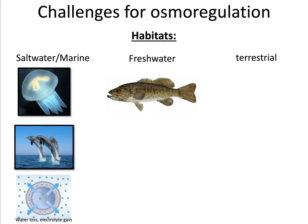When we talk about the challenges that animals face for osmoregulation, you've got to think about the different habitats that animals live in — whether saltwater, freshwater, or terrestrial — and the types of osmoregulation challenges each habitat presents. For example, if you're in a saltwater habitat, like a jellyfish or a dolphin, you're in a super hypertonic environment relative to your cells. The major thing you've got to deal with is water loss and potentially electrolyte gain — salts getting into your cells. We'll learn about some of the adaptations these organisms have to deal with that.